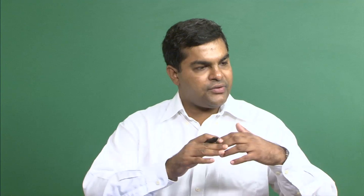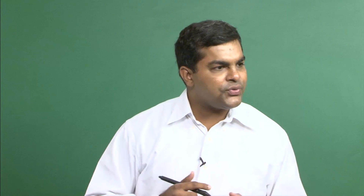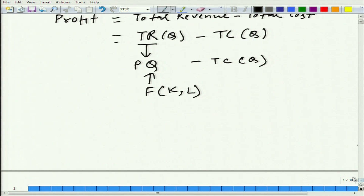Q denotes output. How do we get this output? What does the firm do? Remember, when we started talking about the firm, we talked about technology and said that a firm transforms inputs into some sort of output. So Q = F(K, L), where K represents capital and L represents labor, and P is of course price. In the short run, what we are talking about may or may not be valid, but let us see what happens.